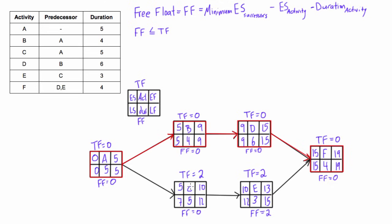Now look at activity C — if we delay it by even one day, it starts on day 6 and finishes on day 11. Bringing 11 over to activity E means its early start has been pushed from 10 to 11, so we've affected the earliest start of a succeeding activity. There's no amount of time we can delay activity C without affecting a successor's early start, so its free float is zero. Free float may be of questionable practical use, but it will likely be asked on a test, so that's how you calculate it.